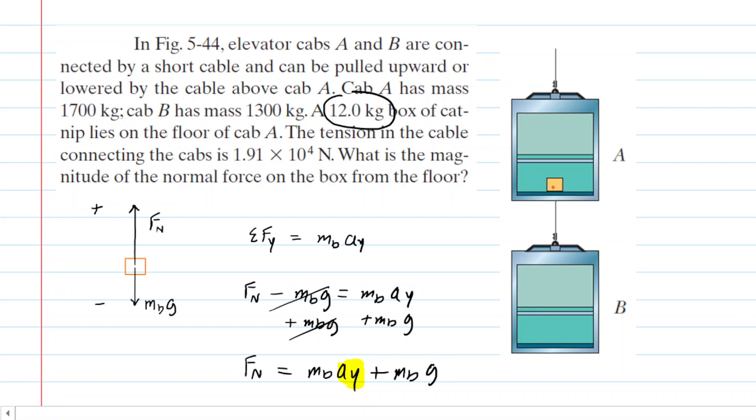Now if we look at the picture everything here is sort of connected as a single system. We have the elevator cab A, elevator cab B, and then the box of catnip. They are all going to be accelerating as one system.